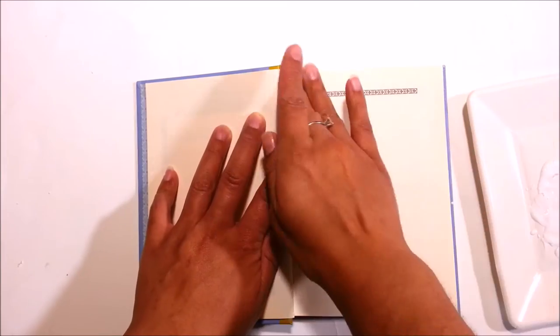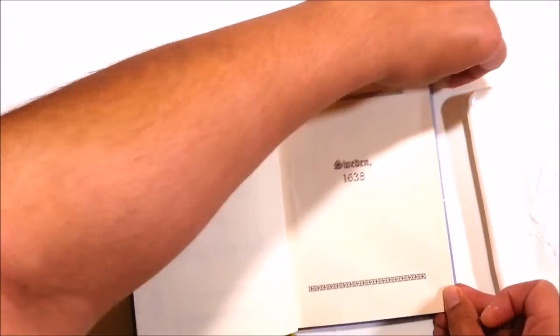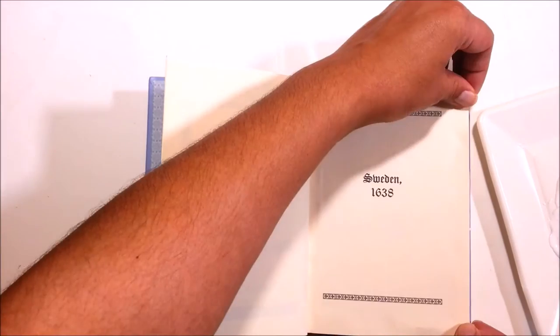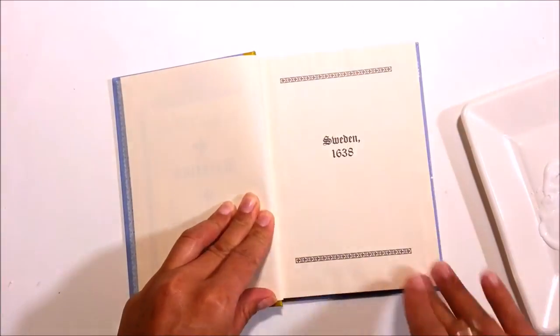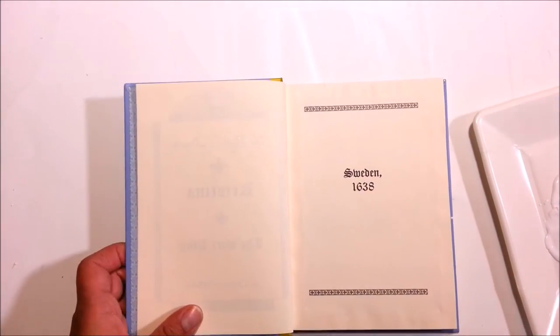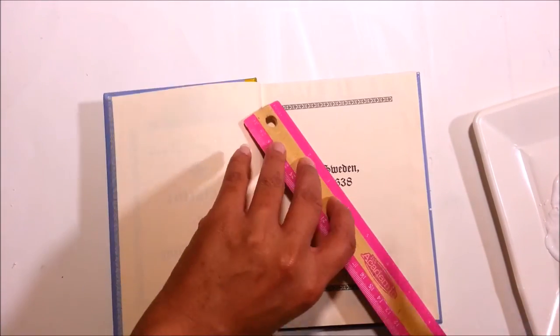Now when you're done with the Mod Podge, you're gonna take one of the title pages and put it on top. Don't press it down, just put it on the top of the edges. I'm gonna close the book and press firmly on the outside so that it's adhered correctly. Then you're gonna take the ruler as well as the pencil.